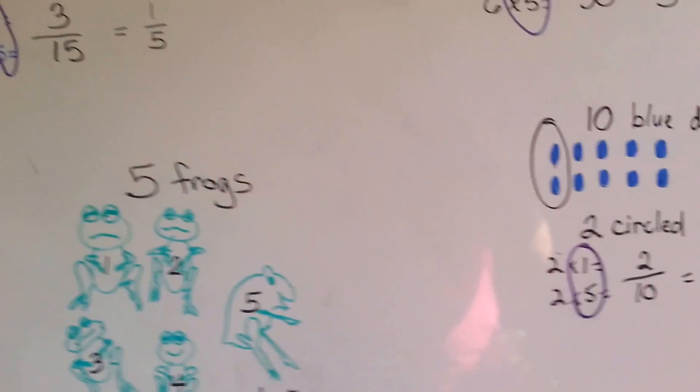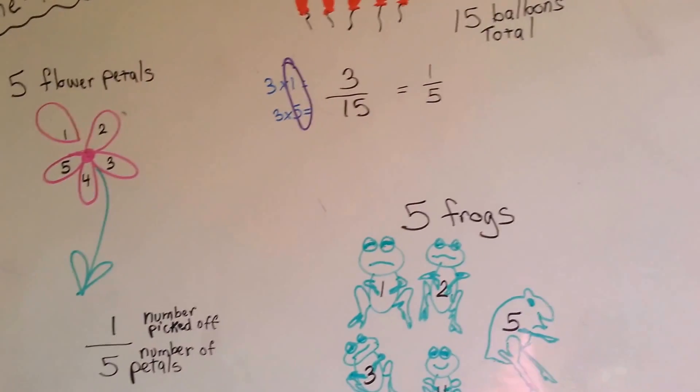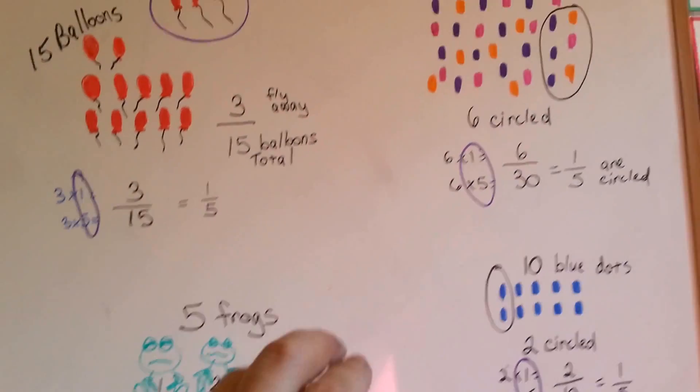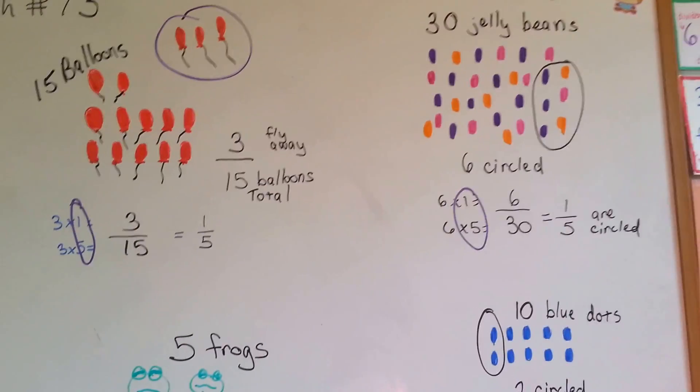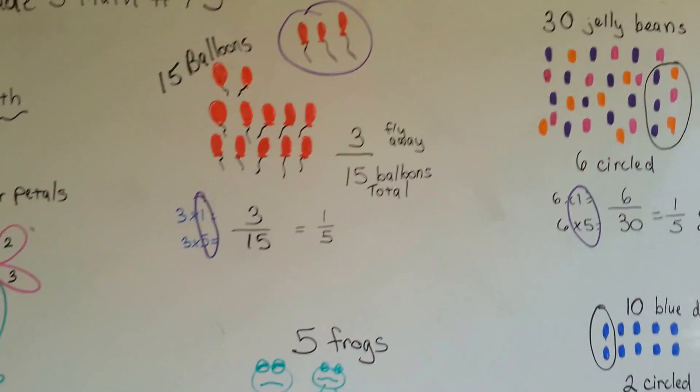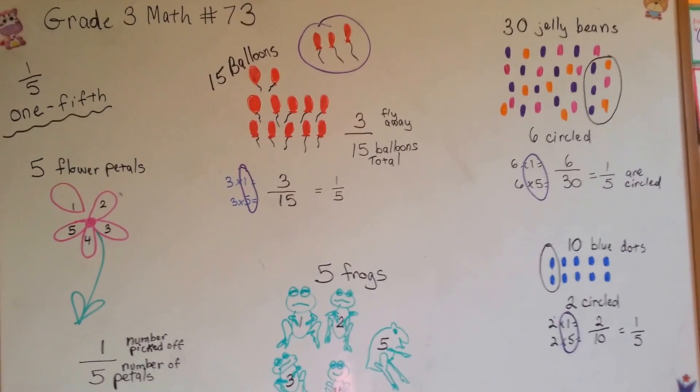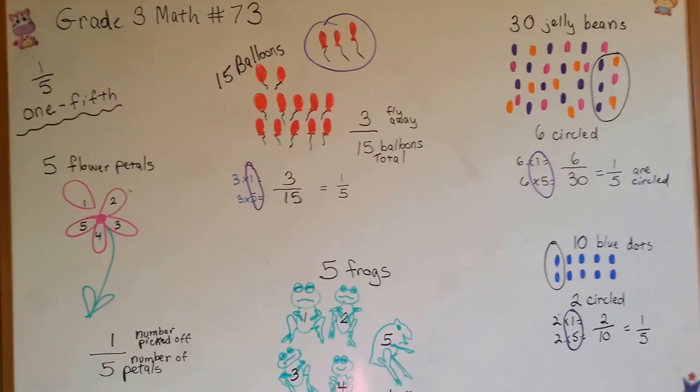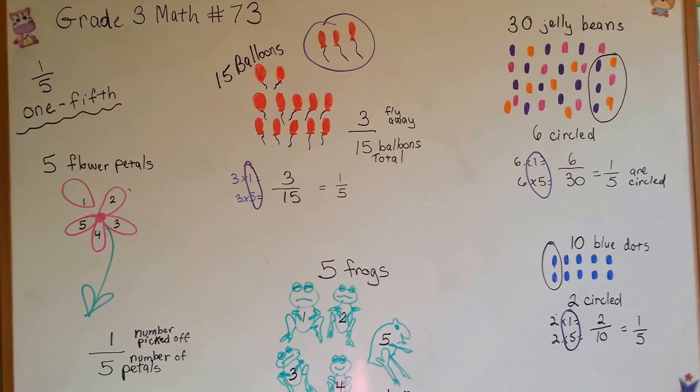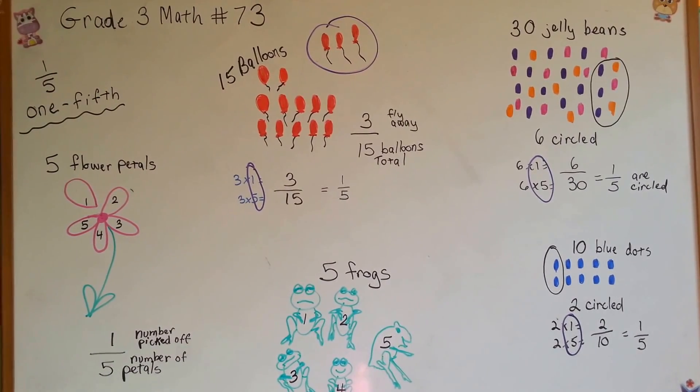You can either have a whole thing split into five parts and take one of them to have a fifth, or you could have a bunch of things in a group and take a part of that group to have a fifth of the group. That is one-fifth and equivalent fractions to one-fifth. One part of something that was split into five parts. We're going to talk about one-sixth next. See you next video. Bye-bye.